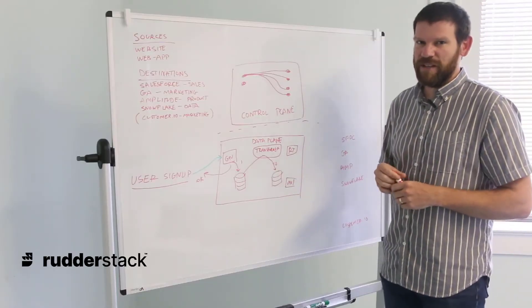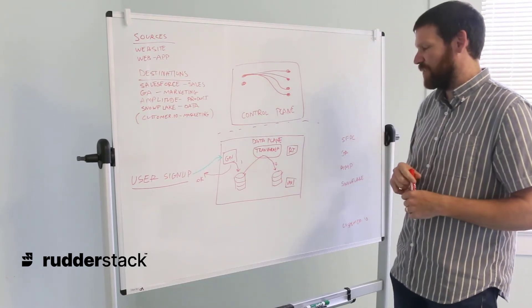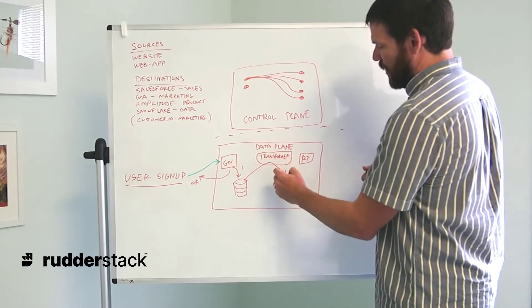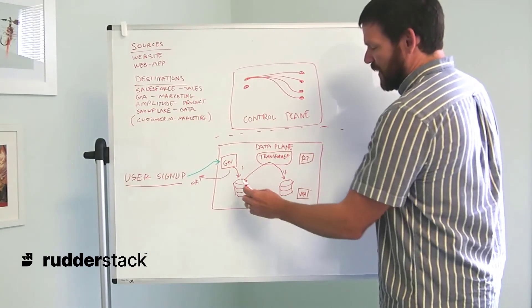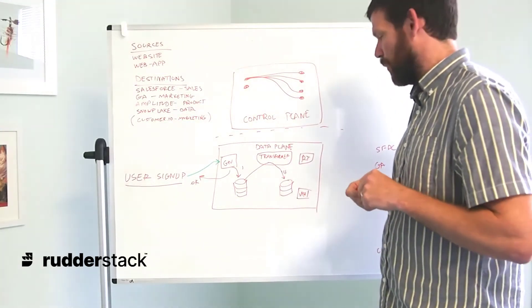We'll come back to the transformer and discuss a couple of things with it in a second. But for now, we're going to continue to follow the process of these events through RudderStack. Once these events have been processed through the transformer and are in the router tables, the tables at the gateway are going to be dropped completely. As I mentioned before, we won't have any record of those events moving forward.